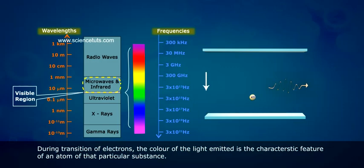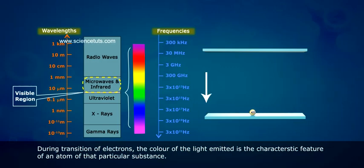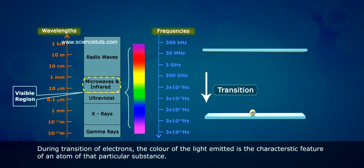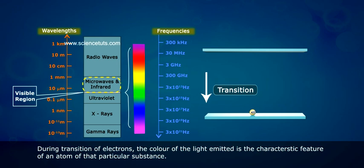During transition of electrons, the colour of light emitted is the characteristic feature of an atom of that particular substance.